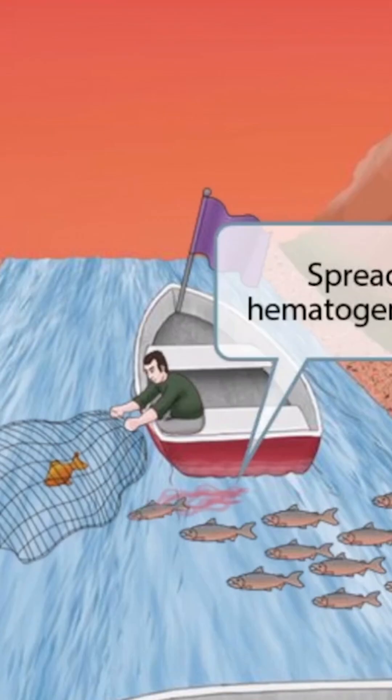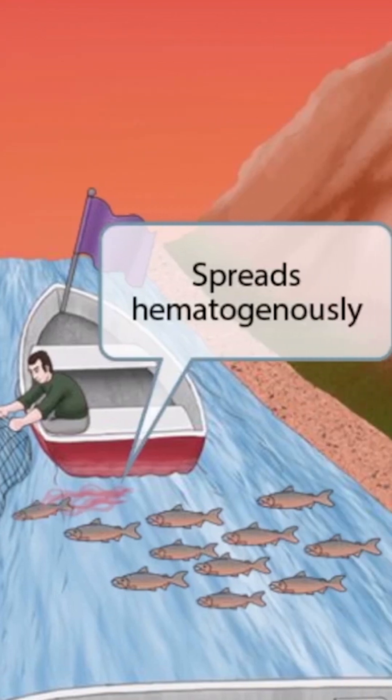Next, notice that we've shown a fish bleeding in the water. He must have been caught earlier and then let loose, and now we can see a trail of blood behind him. The trail of blood is here to help you remember that Salmonella spreads hematogenously.